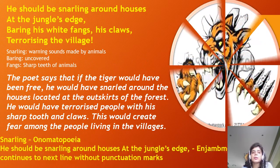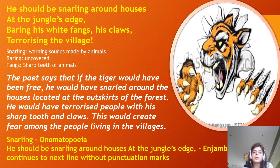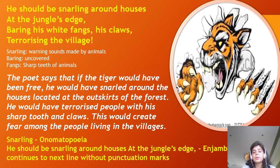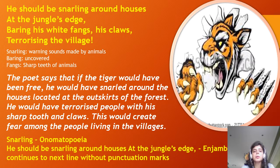Coming to the third stanza: 'He should be snarling around houses at the jungle's edge, baring his white fangs, his claws, terrorizing the village.' 'Snarling' means warning sounds made by animals; 'baring' means uncovering or showing; 'fangs' are the sharp teeth of animals. The poet says that if the tiger had been free, he would have snarled around the houses at the outskirts of the forest, showing his presence, and terrorized people with his sharp teeth and claws, creating fear among the villagers.